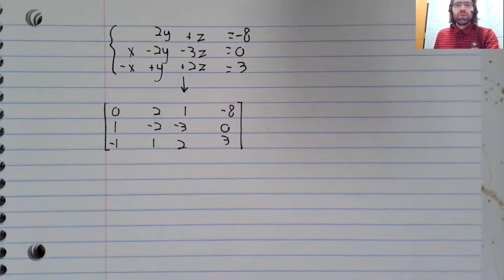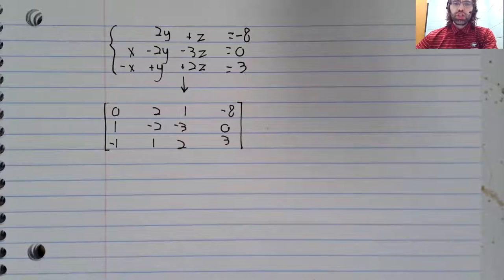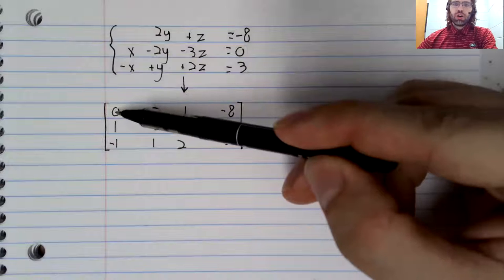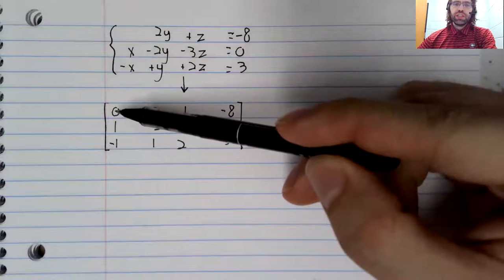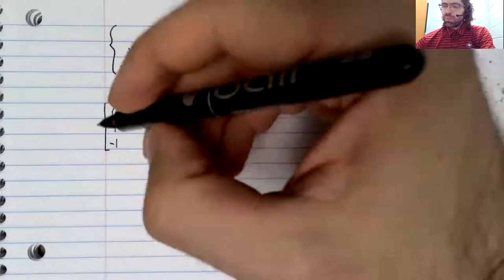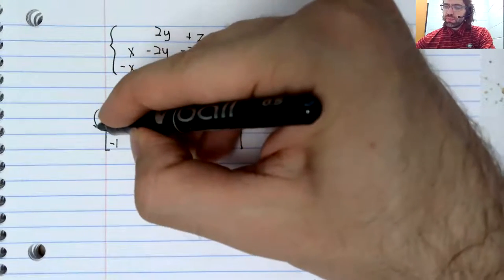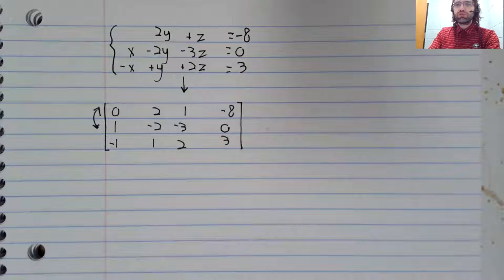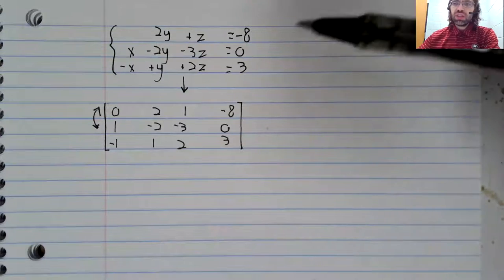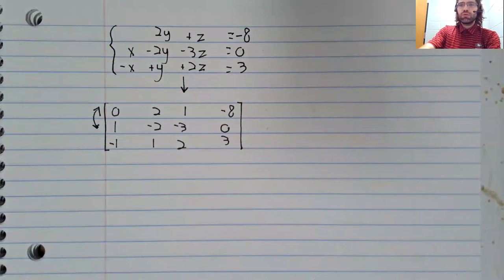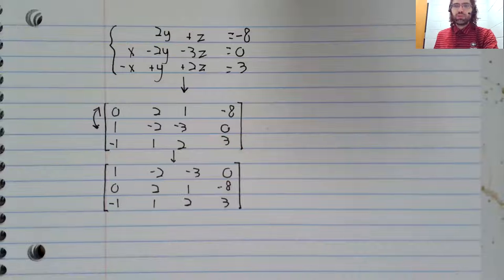We'll perform Gaussian elimination. We need a non-zero entry up here. We'll get that by swapping rows. Let's swap the first and the second row. We could just as easily have swapped the first and the third rows.